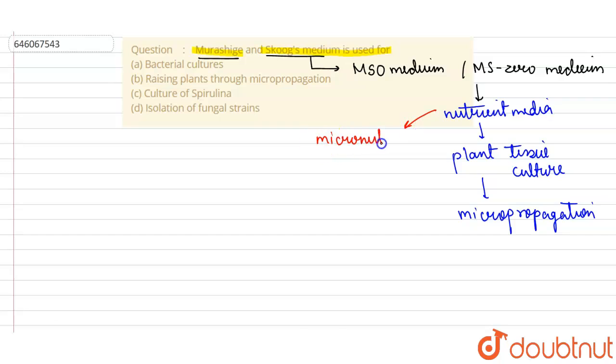One thing that it basically contains is the presence of these trace elements or micronutrients, and it also contains the vitamins which are required for the growth and development of the plant. So we can say they are used for raising plants through micropropagation. They are not used for bacterial cultures, not for the culture of Spirulina, and not for the isolation of fungal strains as well. So option B is the correct option here.